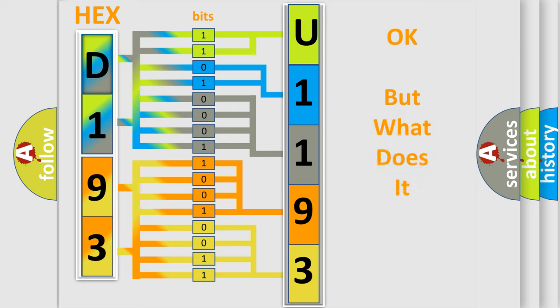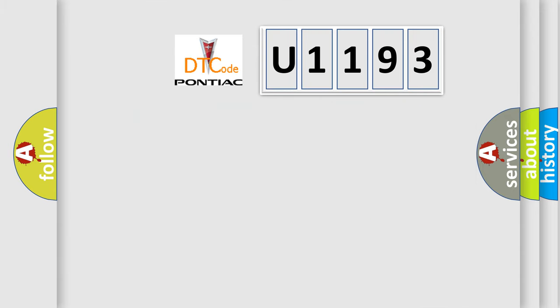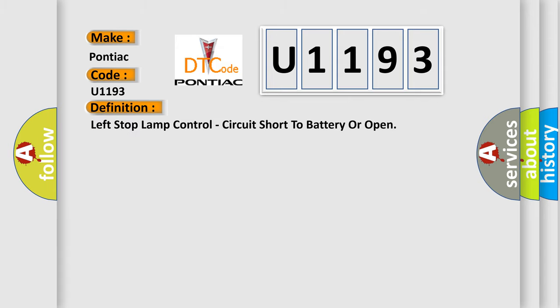The number itself does not make sense if we cannot assign information about what it actually expresses. So, what does the diagnostic trouble code U1193 interpret specifically for Pontiac car manufacturers? The basic definition is: left stop lamp control circuit short to battery or open. Here is a short description of this DTC code.